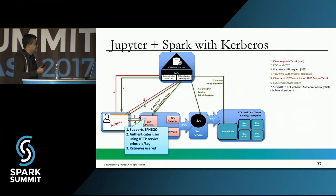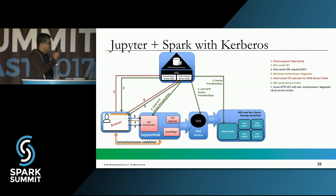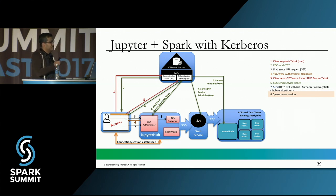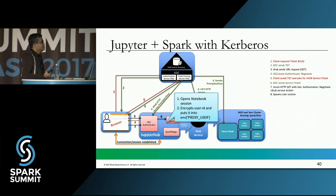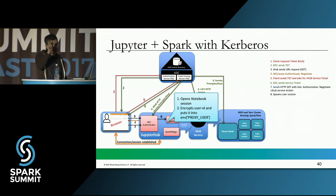Once authenticated, the connection between the browser and JupyterHub is established. The authenticator forwards the request to the KDC Spawner, which spawns a new user session. The KDC Spawner opens a notebook session for that specific user, takes the user ID extracted by the KDC Authenticator, and encrypts it. This encrypted user ID is stored in an environment variable of that process, and will be sent to Livy to be used as a proxy user to impersonate the actual user when submitting the Spark job.